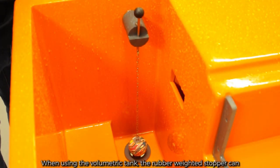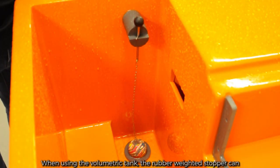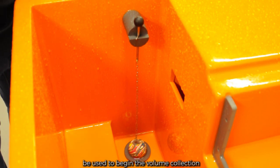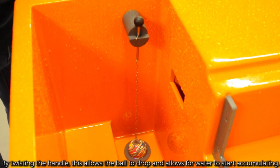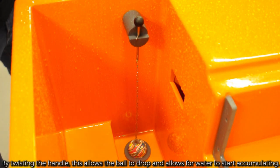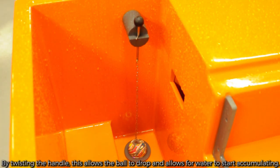When using the volumetric tank, the rubber weighted stopper can be used to begin the volume collection. By twisting the handle, this allows the ball to drop and allows for water to start accumulating.